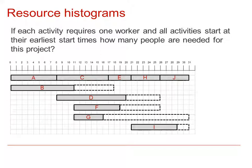Here's our Gantt diagram. If each activity requires one worker and all activities start at their earliest start times, as the diagram shows, how many people are needed for this project?